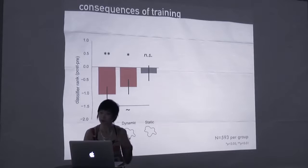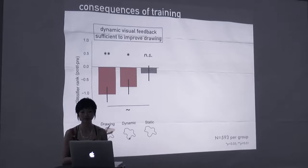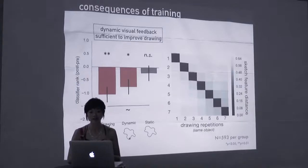But if you took away that dynamic stroke level information, then people didn't improve. Now this was again from a cohort that was yoked to the original session, but they only saw the final sketch produced by the original participant as a static image, and they didn't learn. So we found that dynamic visual feedback is sufficient to improve drawing performance.